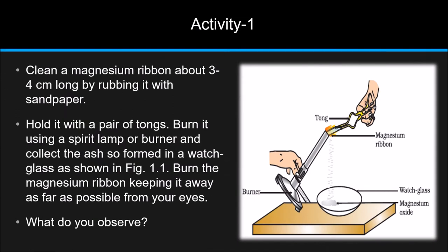Activity 1. Clean a magnesium ribbon about 3 to 4 cm long by rubbing it with sandpaper. Hold it with a pair of tongs. Burn it using a spirit lamp or burner and collect the ash so formed in a watch glass as shown in figure. Burn the magnesium ribbon keeping it away as far as possible from your eyes. What do you observe?